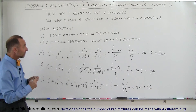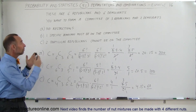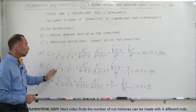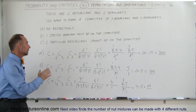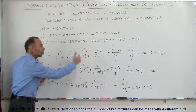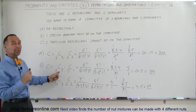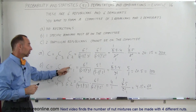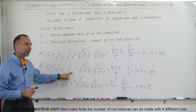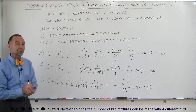This is a nice example where you can see we're looking for the number of combinations with various restrictions — first no restrictions, then various restrictions. Notice that you multiply the number of combinations of each type together to form the total, because for every one combination of Republicans you can have the entire set of combinations for Democrats, and that's why the two are multiplied together.